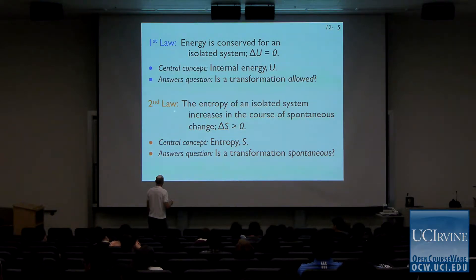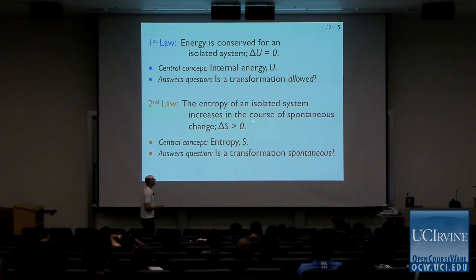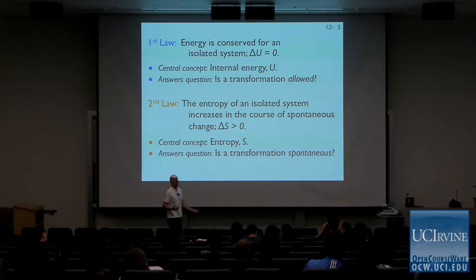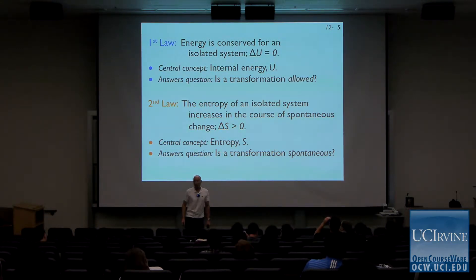In the second law, the entropy of an isolated system increases in the course of spontaneous change. This tells us whether a process that is allowed will also actually happen. Not all allowed processes will happen, and we need to sort allowed processes into those that will not happen and those that will. The central concept here is entropy, not energy, and the key question is: is a transformation spontaneous? Will it happen? This is a pretty important question to answer in chemistry.